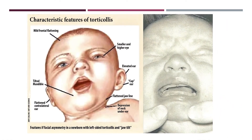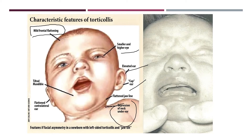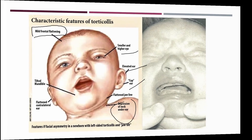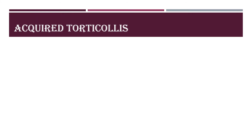Characteristic features of torticollis include mild frontal flattening - with continuous unilateral weight bearing, the skull base and cranium deform such that the vertex reveals a parallelogram-shaped head. There is also a smaller and higher eye, elevated ear, and depressed neck. These are the main characteristic features. That concludes congenital muscular torticollis, where we covered causes, clinical stages, and characteristic features.